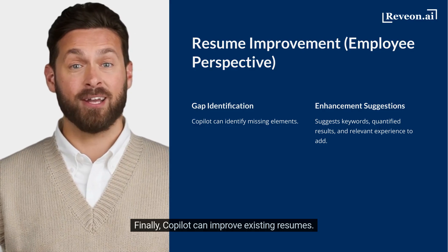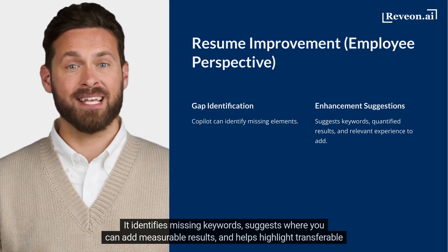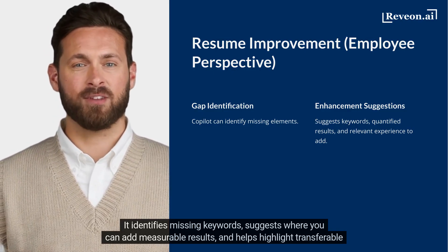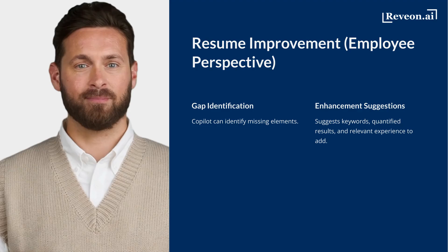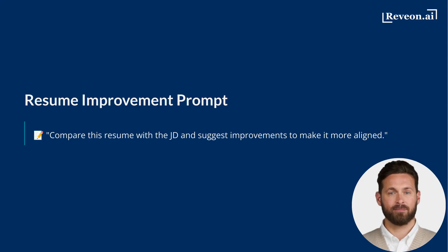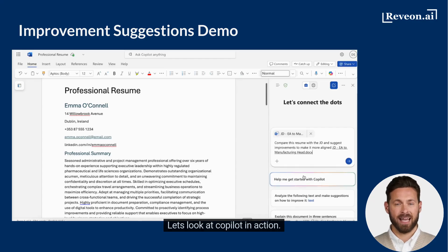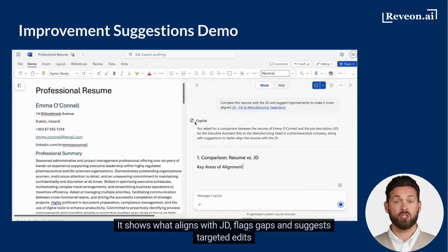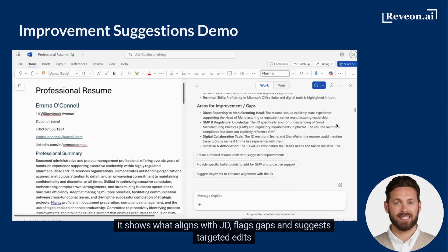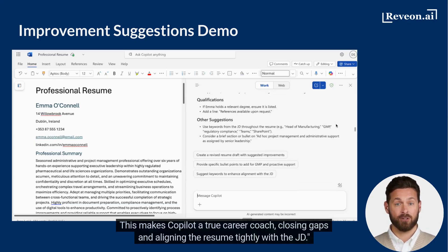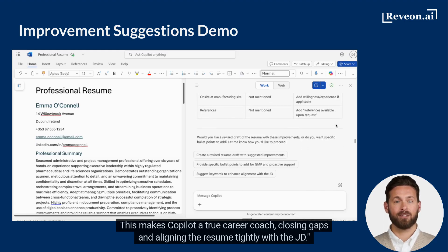Finally, Copilot can improve existing resumes. It identifies missing keywords, suggests where you can add measurable results, and helps highlight transferable skills. The prompt is: Compare this resume with the JD and suggest improvements to make it more aligned. Copilot goes beyond generic tips and compares the resume directly with the JD. It shows what aligns with the JD, flags gaps, and suggests targeted edits. This makes Copilot a true career coach, closing gaps and aligning the resume tightly with the JD.